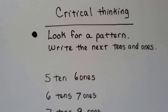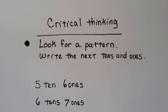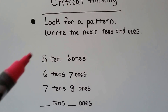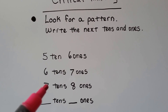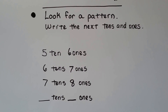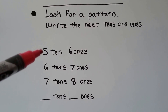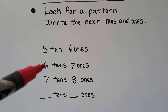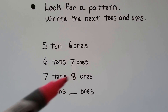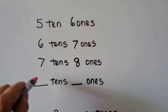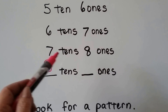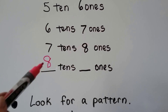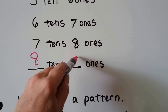Let's try some critical thinking. We need to look for a pattern and write the next tens and ones. We have five tens and six ones, then six tens and seven ones, then seven tens and eight ones. Can you see the pattern? It goes five, six — six, seven — seven, eight. The ones repeat to the tens place. There's always one more one than there are tens, so if you said eight tens and nine ones, you're right.